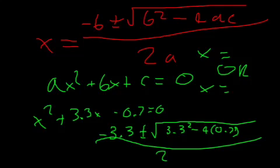So I'm just going to put this into my calculator now. Negative 3.3 plus square root of 3.3 squared minus 4 times 0.7 all over 2. So the first one is negative 0.227. And for the negative one you get negative 3.07 to three significant figures. This is basically the first way of doing it.